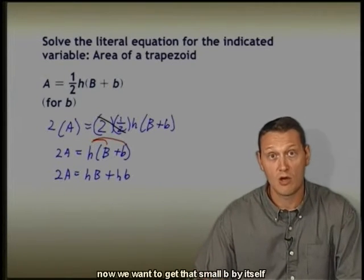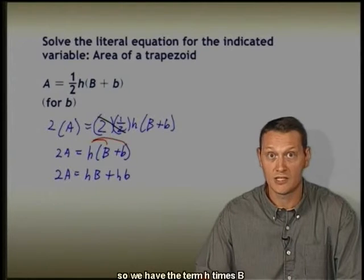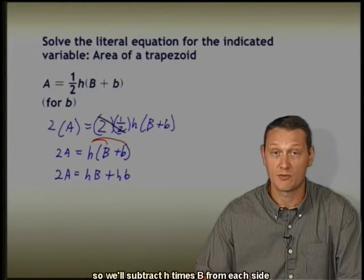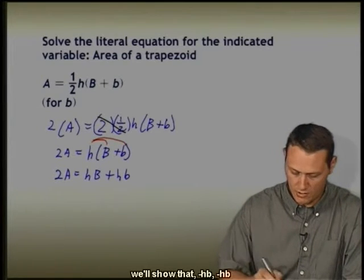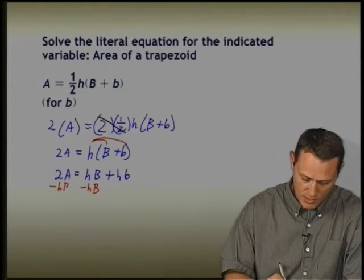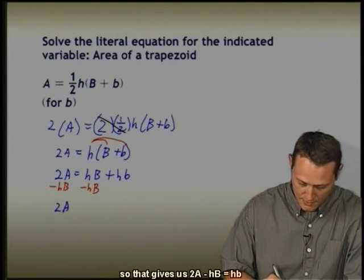Now we want to get that small b by itself. We have the term h times capital B, so let's get rid of that by subtracting hB from each side. Minus hB, minus hB. That gives us 2A minus hB equals hb.